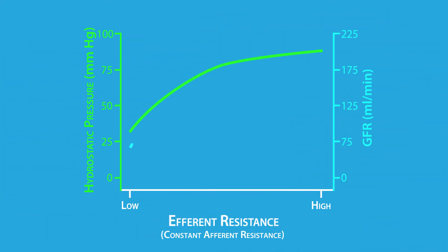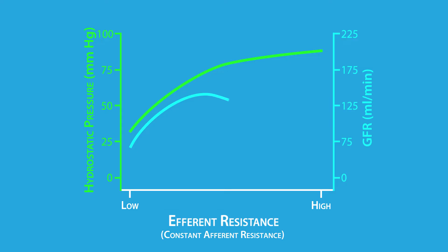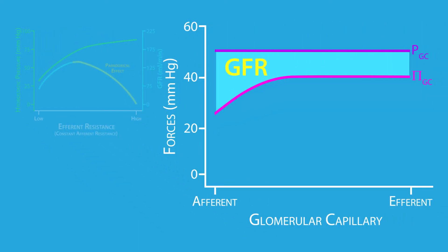With this in mind, it might seem that GFR would follow the changes in hydrostatic pressure. However, this does not occur as you might expect. As hydrostatic pressure is increased, GFR does initially increase, but it plateaus and after which it decreases. This plateau and decrease in GFR is referred to as the paradoxical effect because it contradicts the expected rules. We can explain the paradoxical effect using a graph which shows the relationship between hydrostatic pressure, colloid osmotic pressure, and GFR.